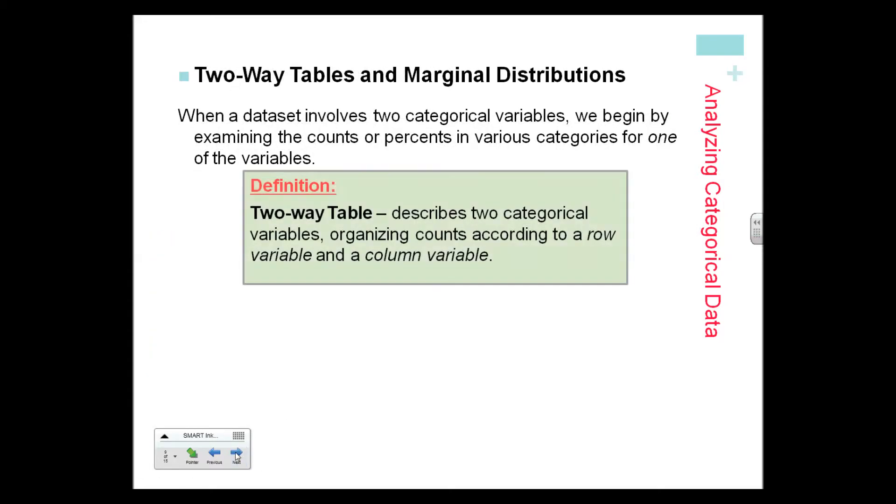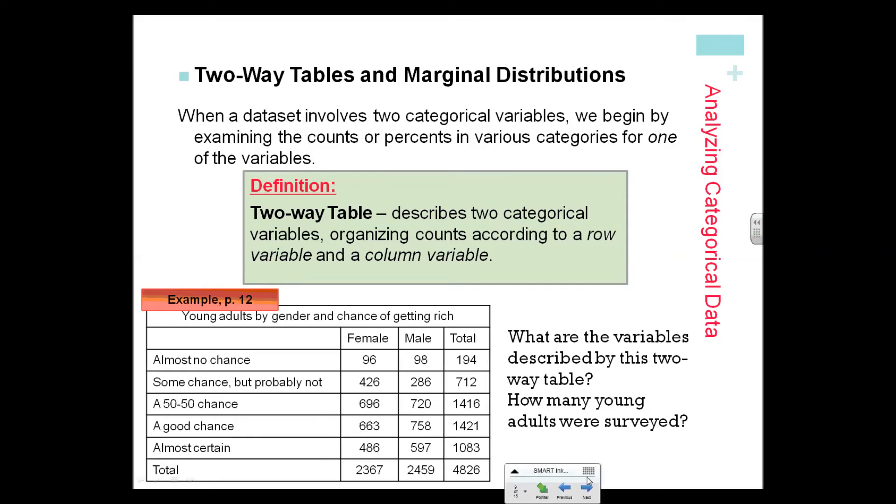Two-way tables make it much more interesting, and this is where it sometimes gets confusing. This data was on page 12, and be sure you understand what it is about.